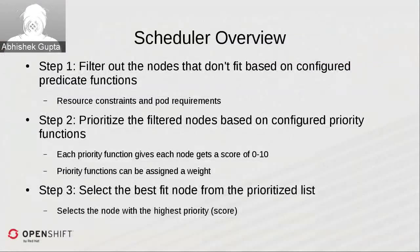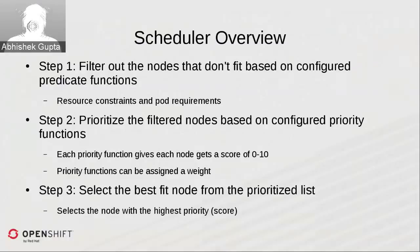In the scheduler overview, the first step takes the list of all nodes in the system that are available and schedulable, and filters out those that do not fit the pod requirements. Requirements a pod could state include certain hosts, ports, disk volumes, or resources needed.